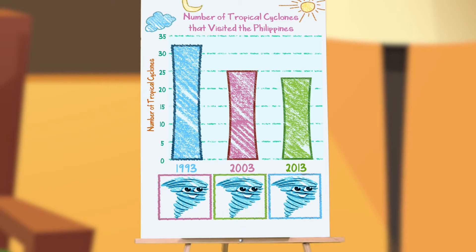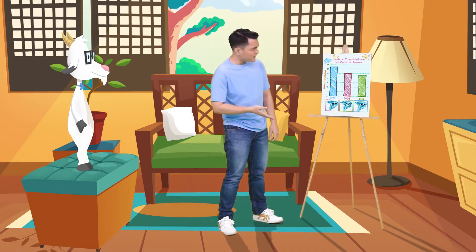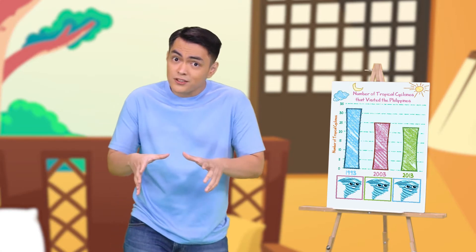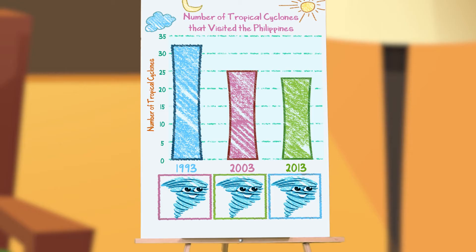Ooh, I thought those were buildings. They do look like buildings, but a bar graph is used to organize information so that you can understand it easily. Like this one — it shows the number of typhoons that hit our country in the past years. There were more typhoons in 1993 than in 2003 and 2013.